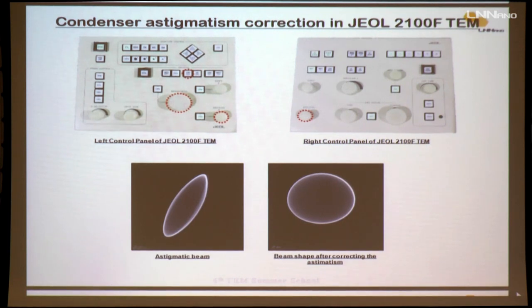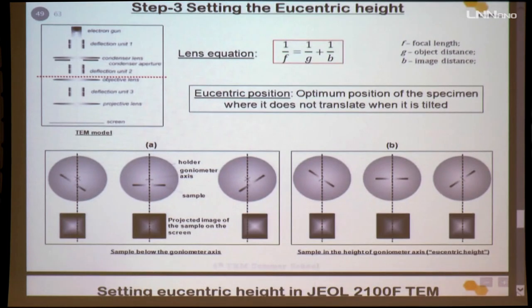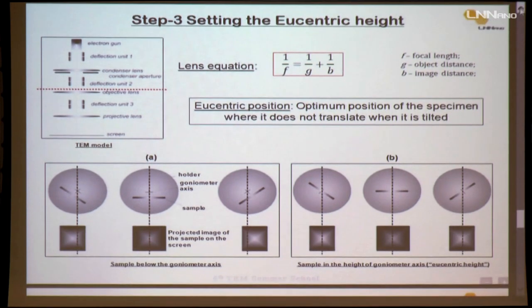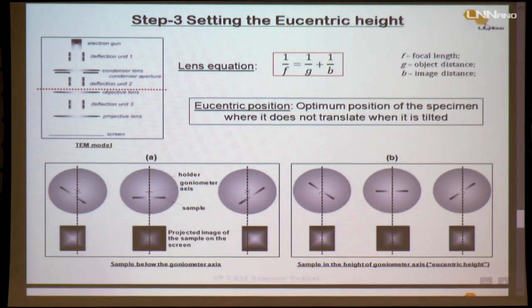The next alignment step is setting the eucentric height. This is really very important, and whenever you're working with the machine, you need to check this step very often. What exactly does eucentric height mean?